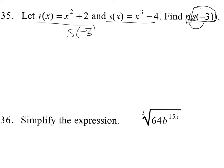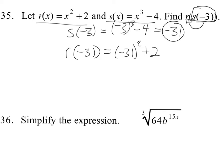So s of negative 3 is equal to negative 3 cubed minus 4. Negative 3 cubed is negative 27. Minus 4 is negative 31. Now that I've got negative 31, I'm going to plug that into function r. And that's going to be negative 31 squared plus 2.